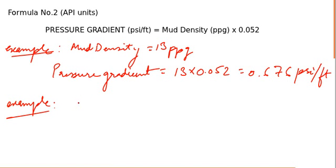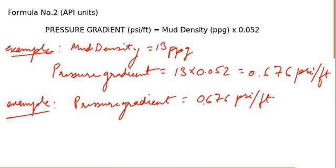You are given that pressure gradient required is 0.676 psi per foot. What should be the mud density for this pressure gradient? Put the values in the formula.